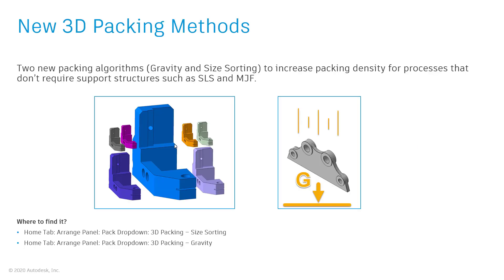In addition to arranging parts, we've made improvements to our 3D packing method. We've added two new 3D packing selections. The first is based on part size, and the second is based on a gravity-based physics engine. The size sorting method prioritizes large parts packed in the center with smaller objects filling the rest of the volume to improve part quality. Using a physics engine to simulate gravity packs parts more closely, resulting in better pack density.